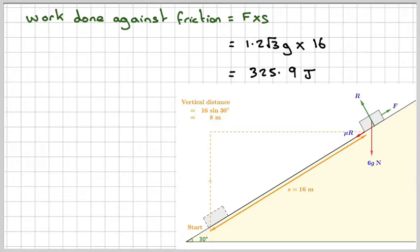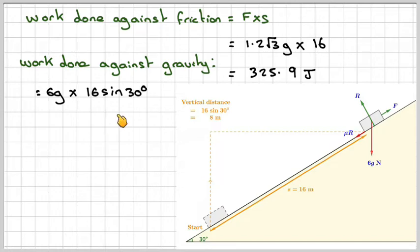Now the work done against gravity. Here's gravity and it has moved a distance of 16 sin 30 degrees because this angle here would be 30 the same as this angle here. So the work done against gravity is going to be 6g times 16 sin 30 degrees which is 470.4 joules.